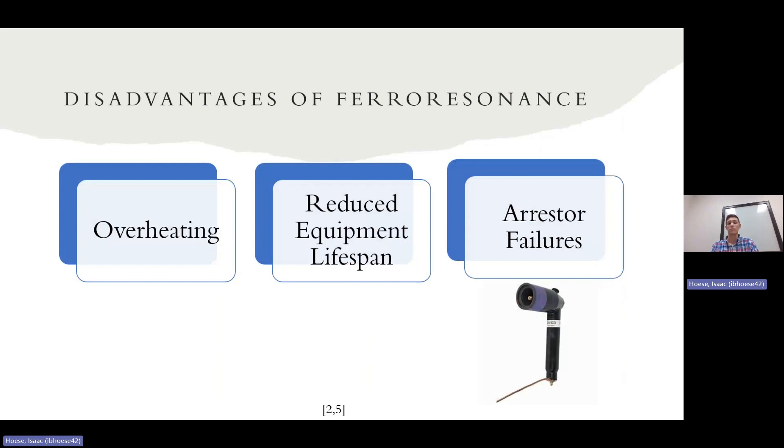And then arrestor failures. Obviously, the arrestors on transformers are to combat lightning. So lightning has over voltage and over current, which ferroresonance meets both of those criteria. So the arrestors could fail thinking that it was a lightning strike. And the transformer itself, it could explode because of the oil inside the transformer heating up. So there's lots of bad reasons that ferroresonance can affect your system.